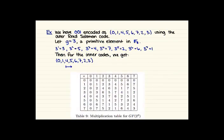All right, so let's look at our example again. So far we've got, using our outer code, we've encoded 001 as 01456723 using our outer Reed-Solomon code. And let's fix g to be 3. So this is a primitive element in F8, which you could see if you worked out the details for which elements of F8 are primitive. And the powers of 3 are 3 to the 1 is 3, 3 to the 2 is 5, 3 to the 3 is 4, and so on.